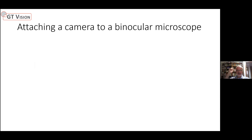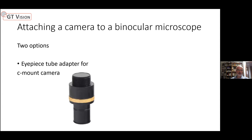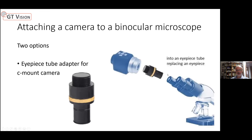If you've got a binocular microscope, you don't have a trinocular port, but there are still ways to attach a camera. There are two options: first, using an eyepiece camera — you take your eyepiece out, plug the eyepiece camera in, and it connects to a PC via USB. The other option is using an eyepiece tube adapter for a c-mount camera, where you attach the c-mount adapter and plug it into the eyepiece. This is more versatile because you have a better choice of cameras and a range of magnifications to suit your sensor size.